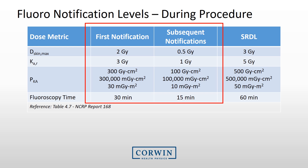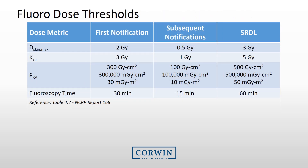Depending on your manufacturer, the reported units may differ. Similar to having recommended notification levels during a procedure, the Joint Commission requires facilities to have radiation exposure and skin dose thresholds. If these levels are exceeded, a further review and/or a patient evaluation is to be performed to check for adverse radiation effects, and the facility is also to review and analyze these instances.